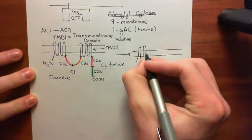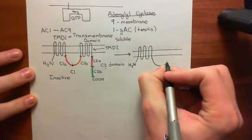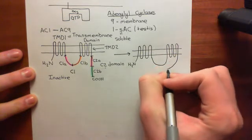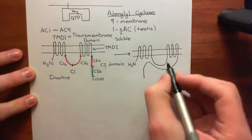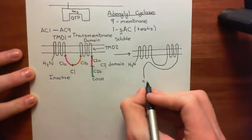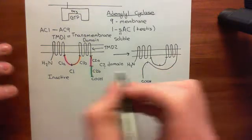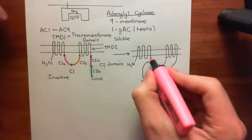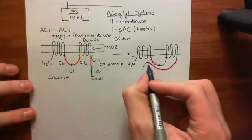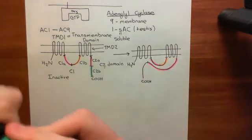Here is transmembrane domain 1 — this cluster of six membrane-spanning alpha helices — with the amino terminus of the polypeptide. Then we've got the C1 domain, which is the loop between transmembrane domain 1 and transmembrane domain 2. In the active enzyme, we need C1A and C2A dimerized together. Using a little artistic license to stretch the carboxylic acid terminal portion, I've made C2A bigger so it can be dimerized with the C1A domain. Here in pink is C1A and here is C2A — now dimerized together, making this an active adenylyl cyclase enzyme. We've also got the C1B domain in orange and the C2B domain in green.